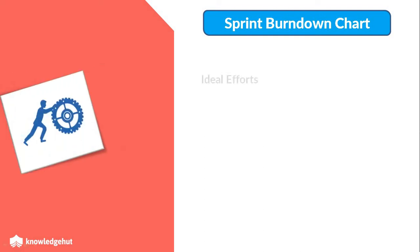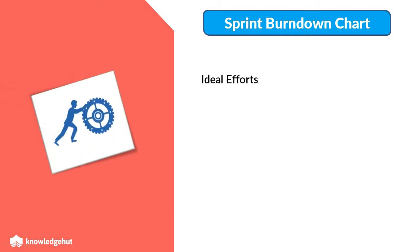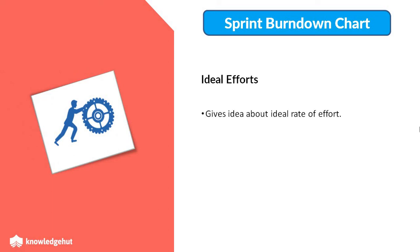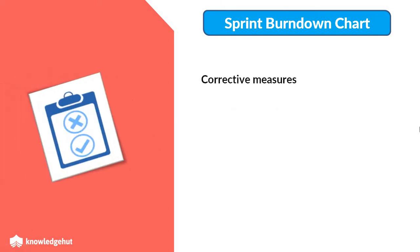Third, Ideal Efforts. The total amount of work to be done and the total amount of time in hand for the complete sprint tells us about the ideal rate of efforts the team should have to complete the work in the given time. Fourth, Corrective Measures. Since the Sprint Burn Down Chart gives real-time data regarding the work progress, it enables us to take corrective measures before it is too late.